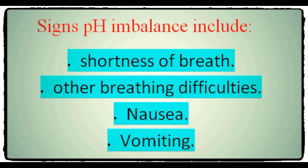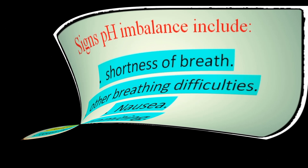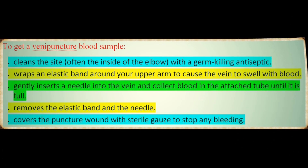Blood samples for a CO2 blood test may be taken from either a vein or an artery. Venipuncture is the term used to describe a basic blood sample taken from a vein. Your doctor will order a simple venipuncture blood sample if they only want to measure HCO3.